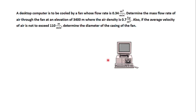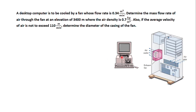A desktop computer is to be cooled by a fan at a high elevation where the air density is low. The mass flow rate of air through the fan and the diameter of the casing for a given velocity are to be determined. The flow through the fan is steady, and the density of air at this high elevation is given to be 0.7 kilogram per cubic meter.